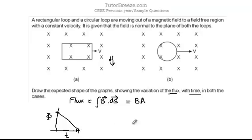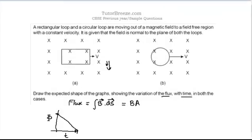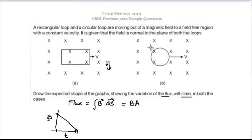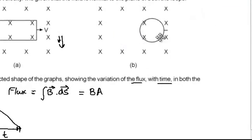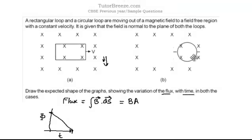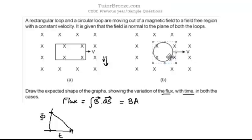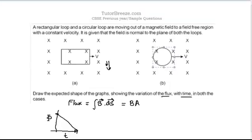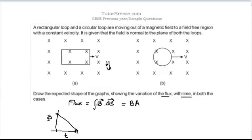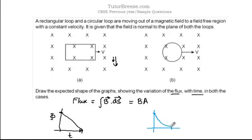For the circular loop, as it moves out, the area is not changing uniformly. So for the circular loop the flux versus time graph is nonlinear — flux starts at maximum, reaches 0 after a certain time, but the change is nonlinear. We don't know the exact variation, we can just say that this is nonlinear, whereas the rectangular loop gives a linear graph.